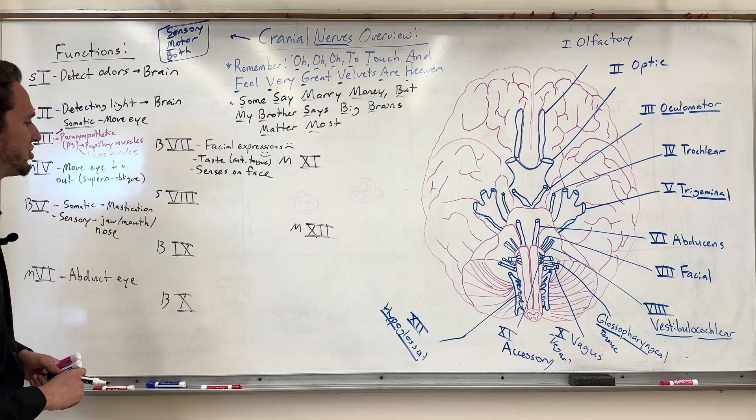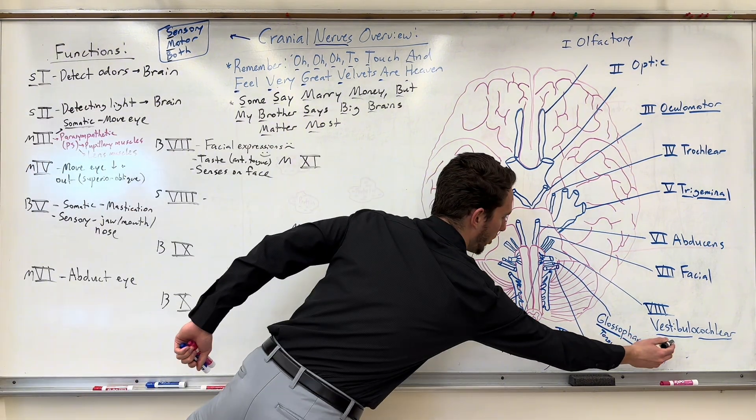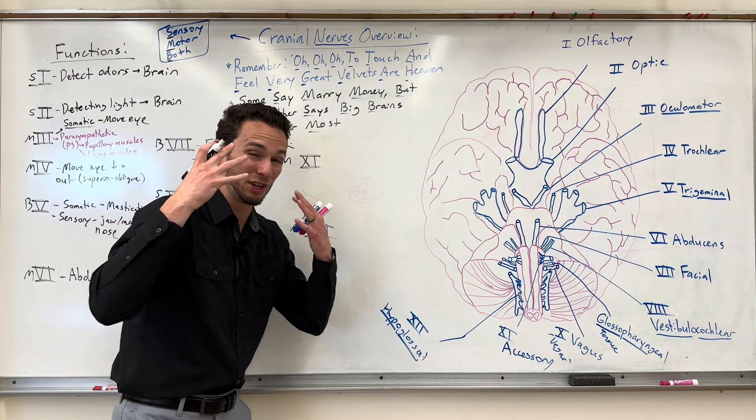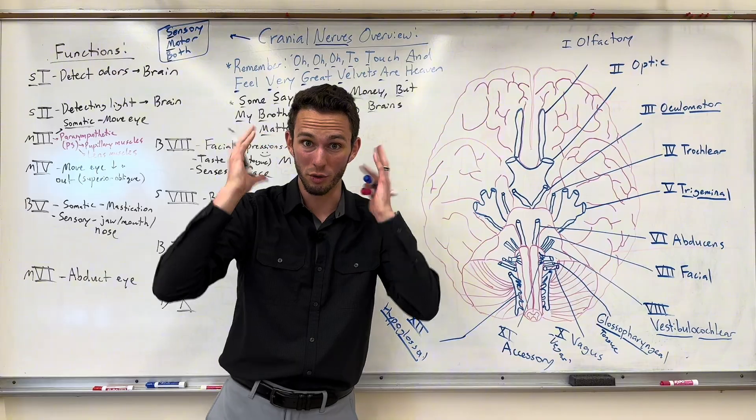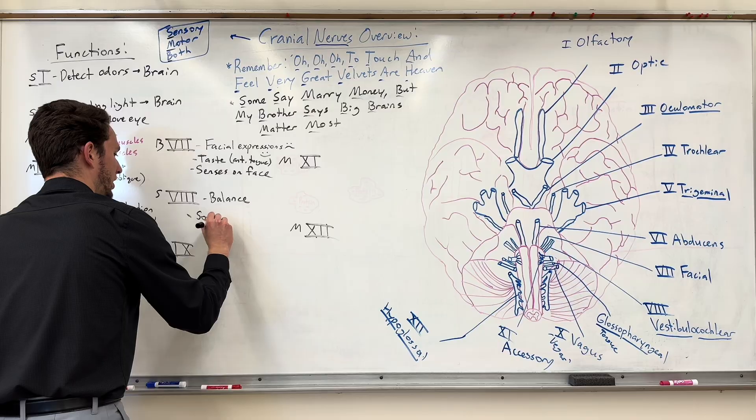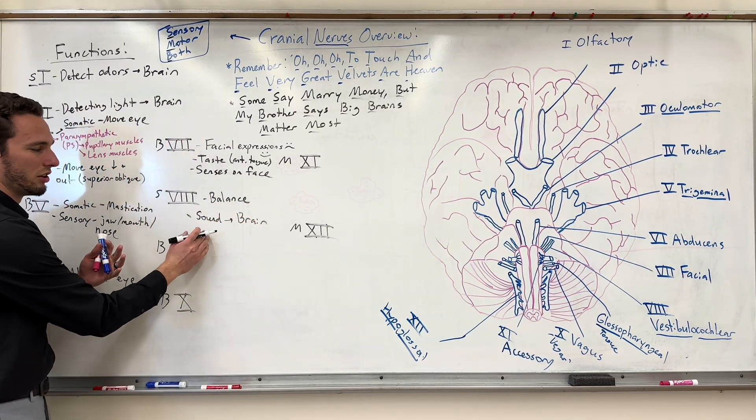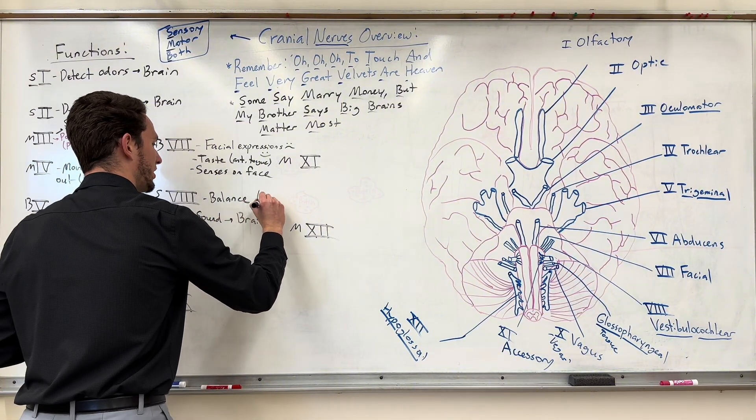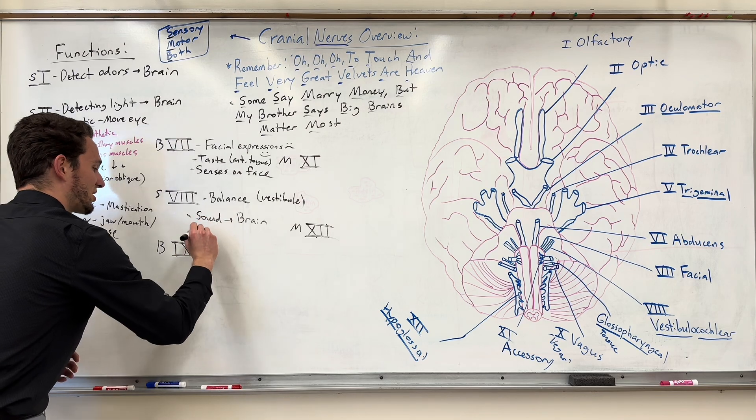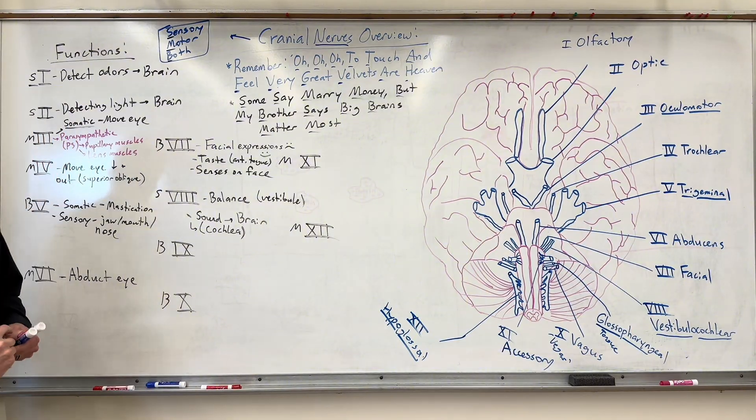Great, we're moving right along, y'all. Number eight, we've got that vestibulocochlear. This is just sensory, because the vestibule, that vestibule part, is going to deal with equilibrium and balance. I'm just going to write balance. So basically keeping your head upright and knowing where you are in space. And then the cochlear part is going to deal with hearing. So sound, and then sending that sound back to the brain, or sending the transmissions of the signal of sound back to the brain. So the balance part, once again, is in the vestibule. It's called the vestibular nerve, the branch of it. And then the sound is actually going to be traveling through the cochlea, the cochlear nerve.